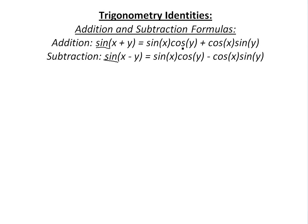Sine of x plus y is going to equal sine x cosine y plus cosine x times sine y. And similarly, if it's a subtraction, you just put a negative here — negative becomes a negative there.